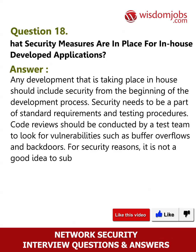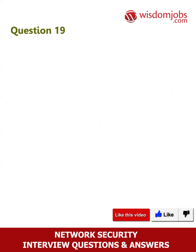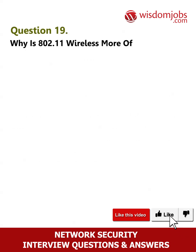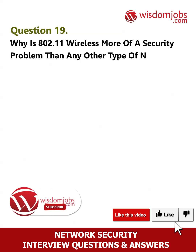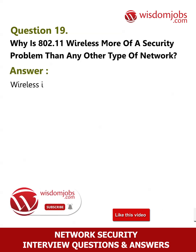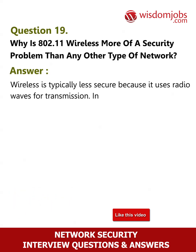Question 19: Why is 802.11 wireless more of a security problem than any other type of network? Wireless is typically less secure because it uses radio waves for transmission. In other words, you have your data floating in airspace, which makes it more susceptible to being compromised.